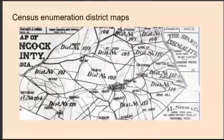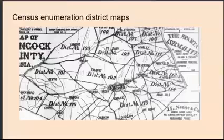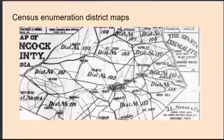Census enumeration district maps: an enumeration district, as created by the Bureau of Census, was an area that could be covered by a single enumerator — meaning a census taker — in one census period. Enumeration districts varied in size from several city blocks in densely populated urban areas to an entire county in sparsely populated rural areas. These maps show the boundaries and numbers of the census enumeration districts. If you cannot find your ancestors on the census with keyword searching, but you know which enumeration district they were in, you can browse the census image page by page within that district to find them.